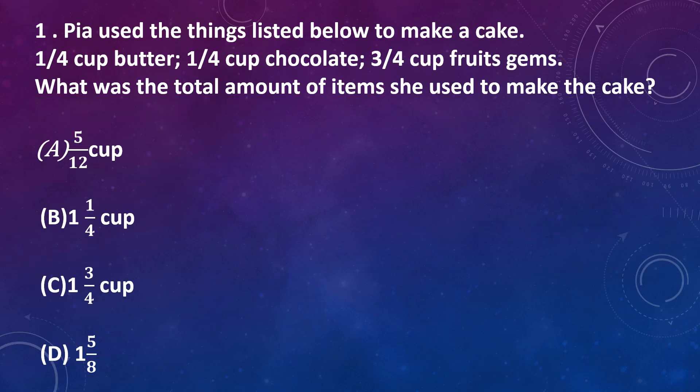Question number 1: Pia used the things listed below to make a cake - 1 by 4 cup butter, 1 by 4 cup chocolate, 3 by 4 cup fruit jams. What was the total amount of items she used to make the cake? Option A: 5 by 12 cup, Option B: 1 and 1 by 4 cup, Option C: 1 and 3 by 4 cup, Option D: 1 and 5 by 8 cup.